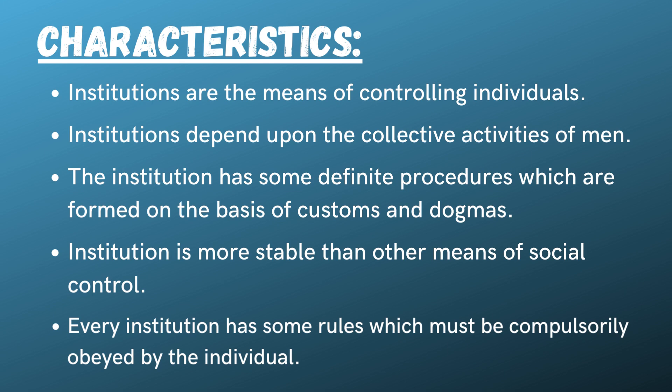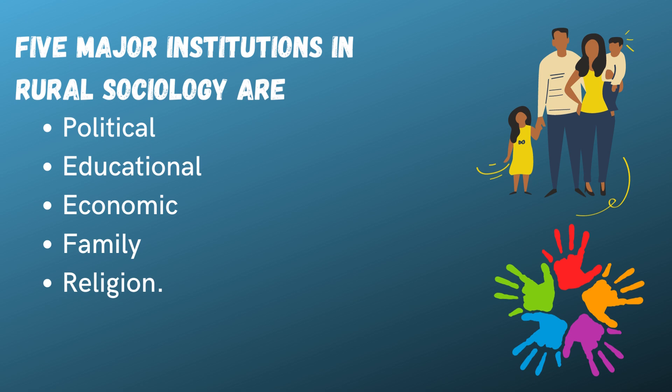Characteristics: Institutions are the means of controlling individuals. Institutions depend upon the collective activities of men. The institution has some definite procedures which are formed on the basis of customs and dogmas. Institution is more stable than other means of social control. Every institution has some rules which must be compulsorily obeyed by the individual.